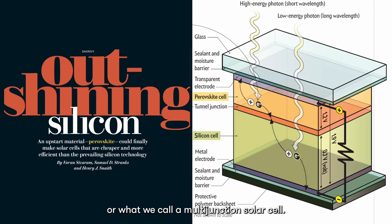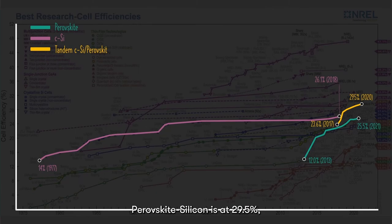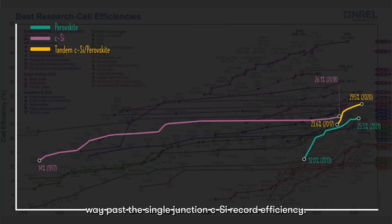This involves developing a perovskite-silicon tandem or what we call a multi-junction solar cell. A high bandgap perovskite layer is deposited on top of a low bandgap silicon layer. The current record cell efficiency for tandem perovskite is at 29.5%, way past the single junction crystalline silicon record efficiency.